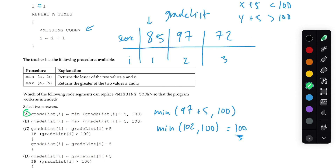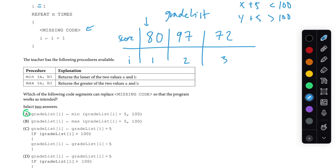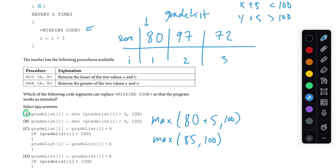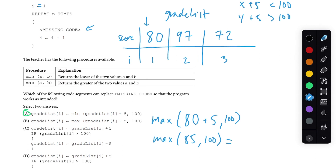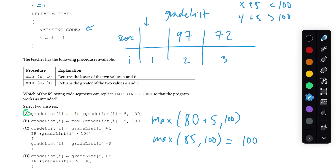Remember it says select two answers, so we keep looking. Answer B uses max(grade list[i] + 5, 100). For the first student: max(85, 100) = 100. This sets the student's grade to 100 instead of the correct 85. So B is not a valid code segment because it doesn't do that math correctly.